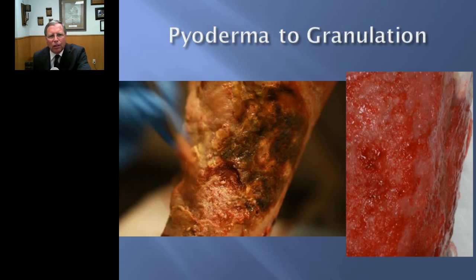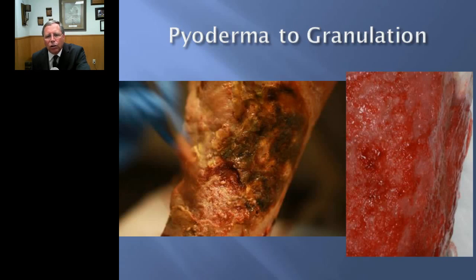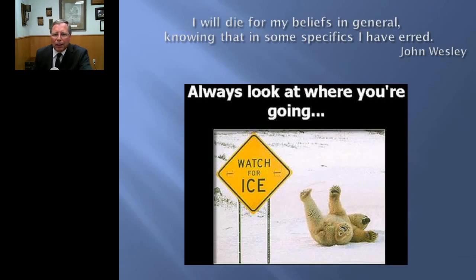Even necrotic tissue harbors organized biofilm structures, as confirmed by biopsying areas of necrosis. After frequent debridement and biofilm-based wound care, we can get to proper granulation tissue. So many referrals mention 'necrotic granulation tissue' — but if something is necrotic, it's not granulation tissue. Granulation tissue needs that bumpy texture and color; when it looks otherwise, it's not granulating.